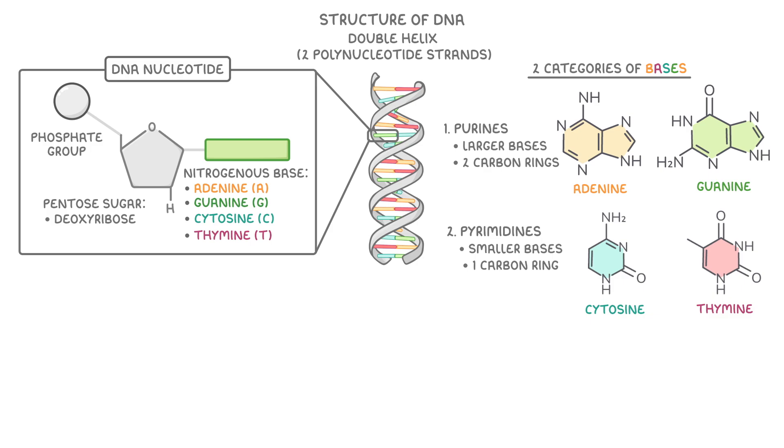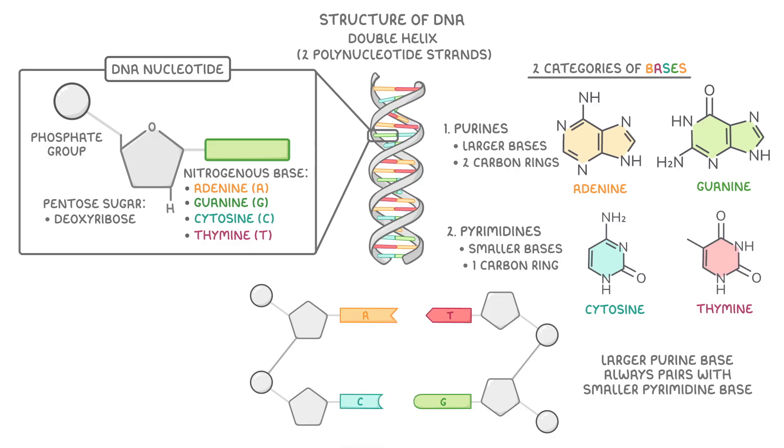Now in order to form double-stranded DNA, and maintain a constant distance between the two sugar phosphate backbones, a larger purine base, so adenine or guanine, always pairs with a smaller pyrimidine base, thymine or cytosine.